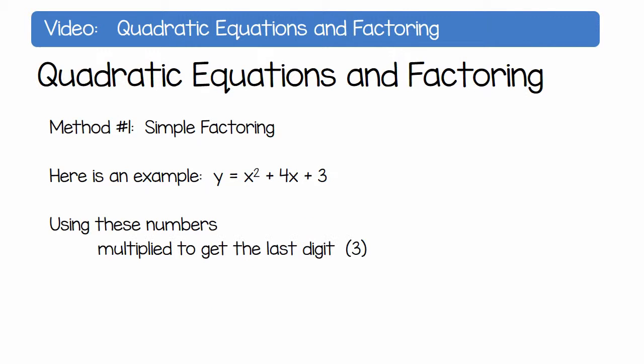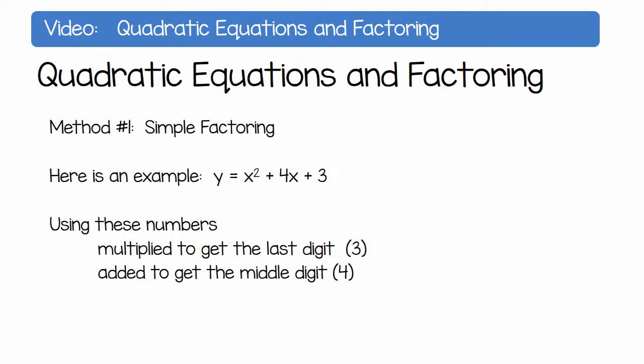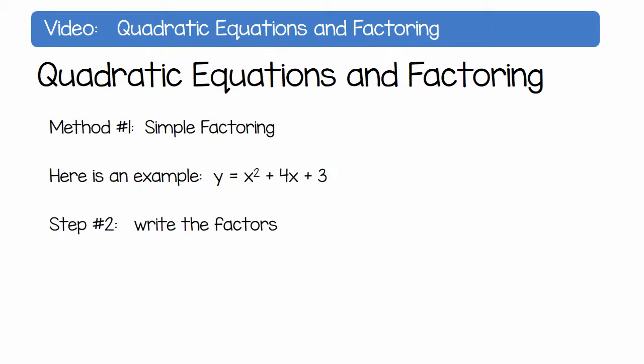Use these numbers: multiply to get the last digit 3, added to get the middle digit 4. 3 times 1 is 3. 3 plus 1 is 4. The digits are 3 and 1. So what I can do now is write the factors: x plus 3, x plus 1. Done.